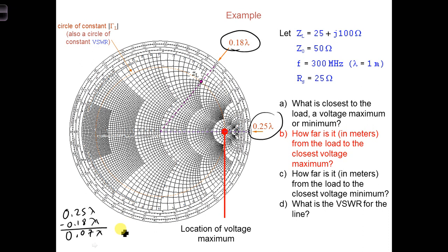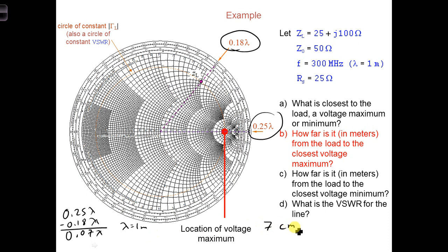Lambda was given earlier — it's equal to 1 meter — so the distance in meters from the load to the first voltage maximum is 7 centimeters.